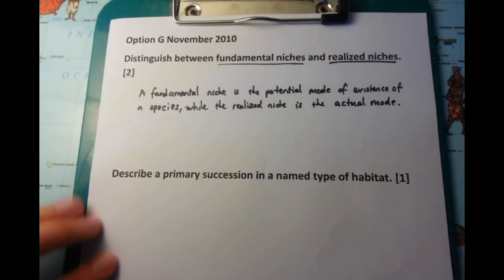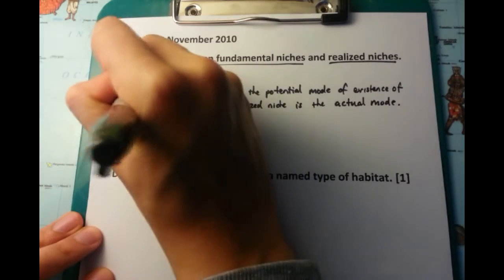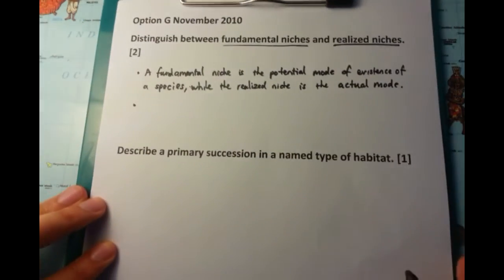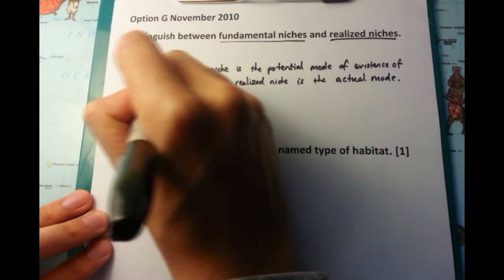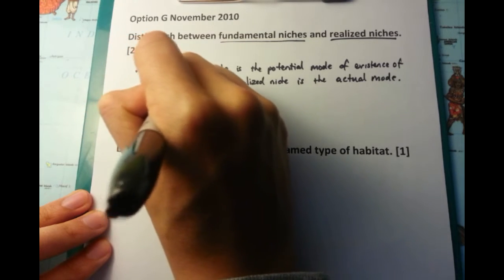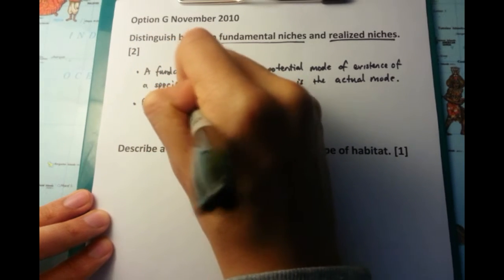An example that I give is that if you have mice which are living in a particular area, there are 20 different holes that it could live in, then two of those they might not be able to live in because one might be occupied by a predator.